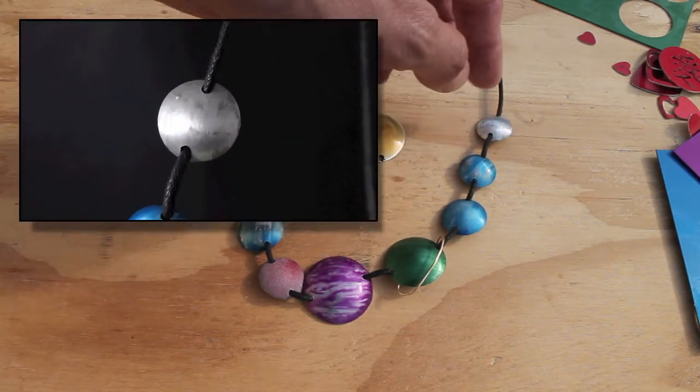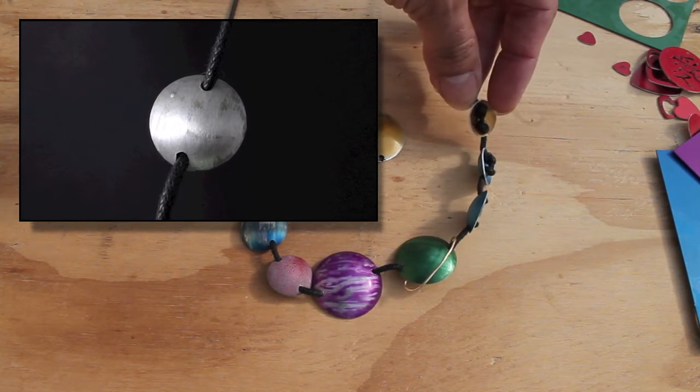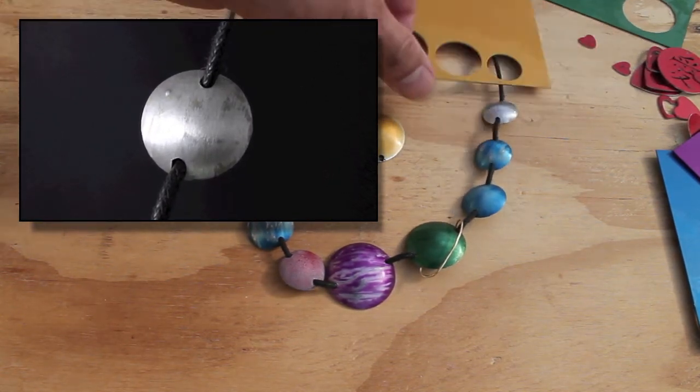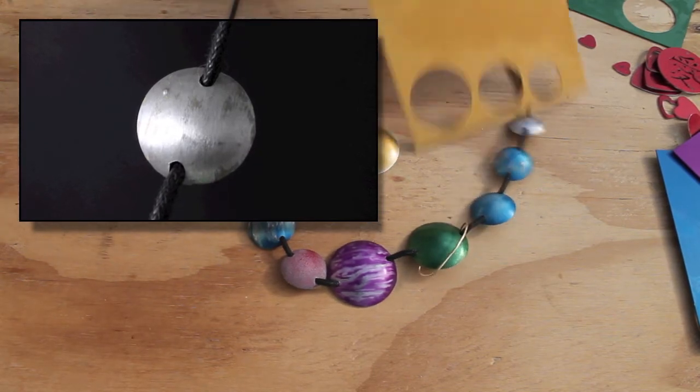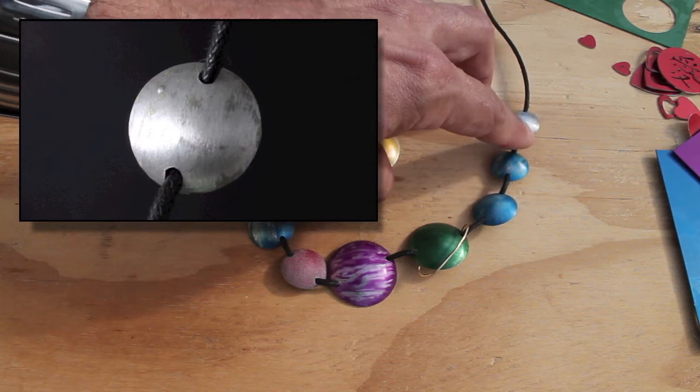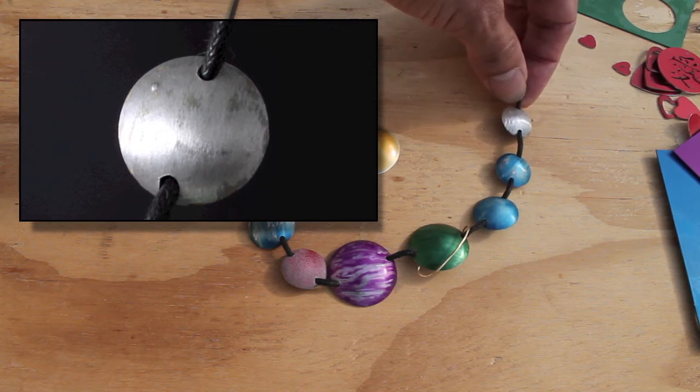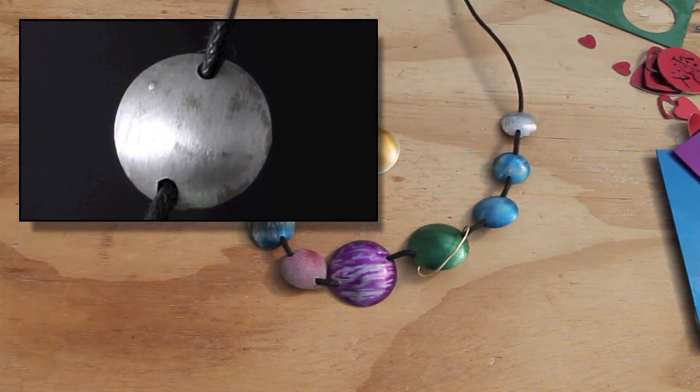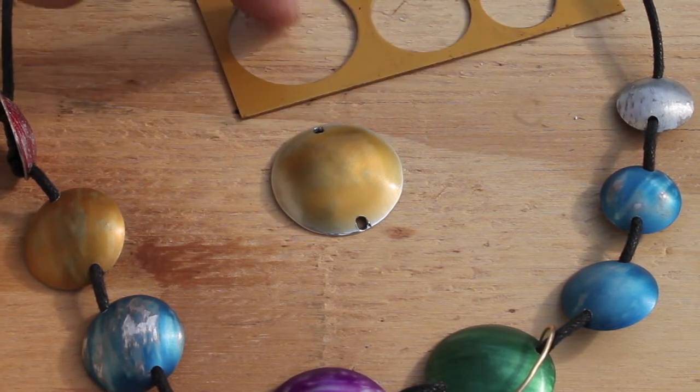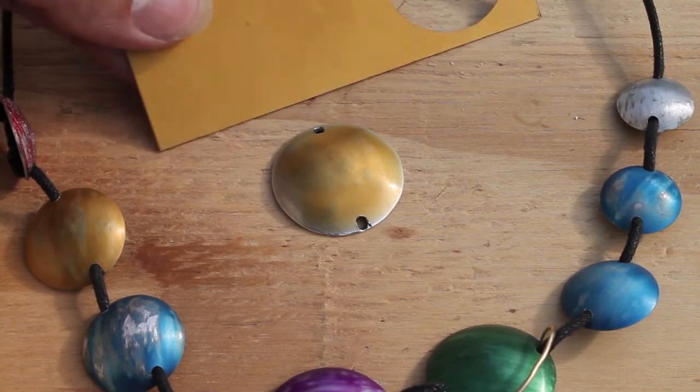And lastly here, this is Pluto. This is actually a piece of the gold anodized aluminium. In fact, it's actually that hole there. I used a little drum sander on the pendant drill for that to strip the surface completely. I've left it with a kind of matte sanded finish. That's quite nice.